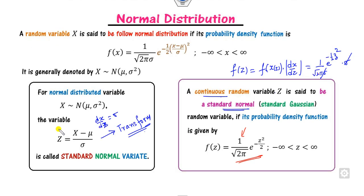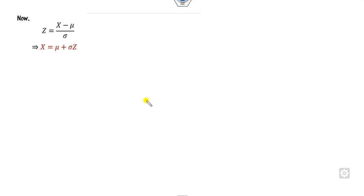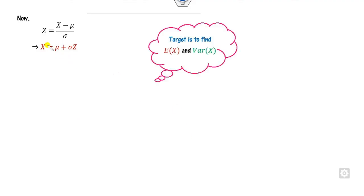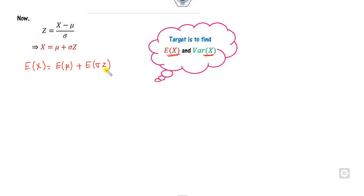Our target now is to find the mean and variance of x. We can find x from the relation z = (x − mu)/sigma. In order to find the mean and variance of x, we need to find E[x] and Var(x). We can take the expected value on both sides of the equation.